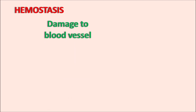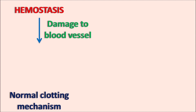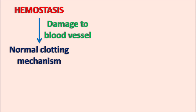What is hemostasis? Whenever the blood vessel is going to be damaged, immediately our physiological system stimulates a protective mechanism which results in the activation of the coagulation factors as well as the aggregation of the platelets, resulting in the formation of a clot which arrests the blood flow from the damaged blood vessel. So hemostasis is a normal clotting mechanism which reduces the blood flow to prevent the loss of blood.